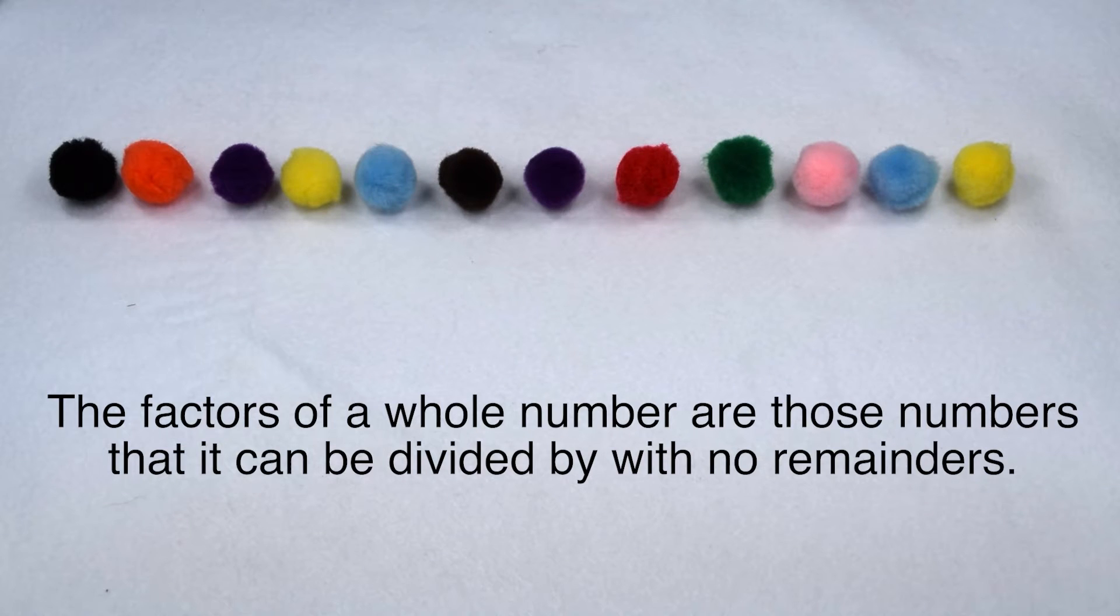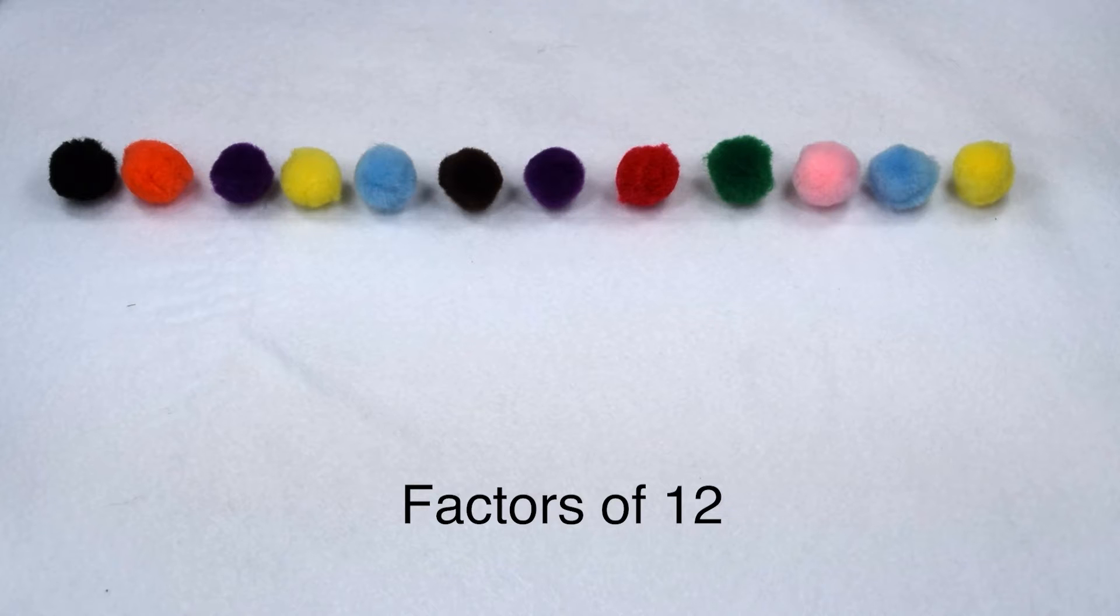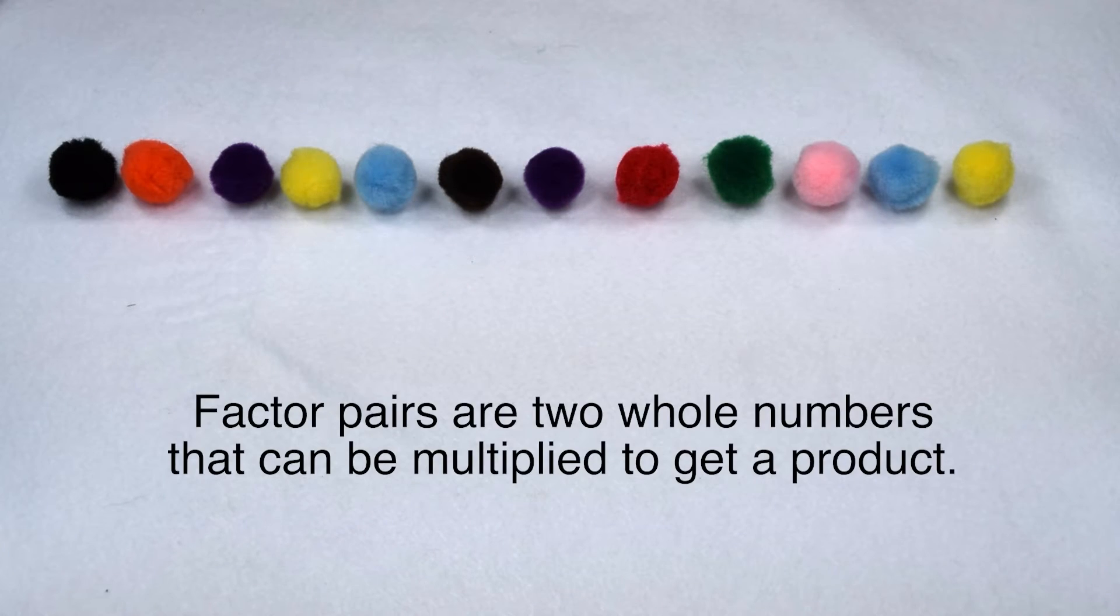The factors of a whole number are those numbers that can be divided by with no remainders. We want to find the factors of 12. To do that we're going to start by finding its factor pairs. Factor pairs are two whole numbers that can be multiplied together to get a product.